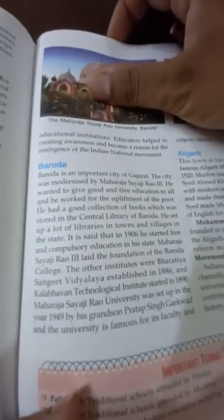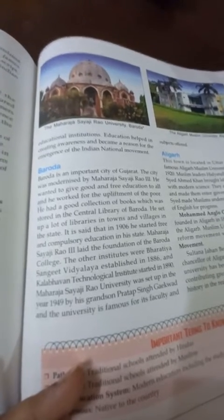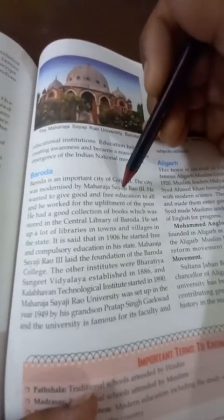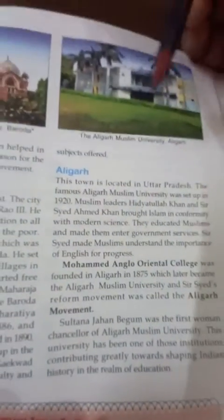Baroda is a small and important city of Gujarat state. Before independence it was a princely state, and Maharaja Shivaji Rao III gave free and compulsory education to all his people. The idea of free and compulsory education for all was also incorporated into the Indian Constitution after independence. Our Constitution makers kept in mind this principle, drawing inspiration from the steps taken by Maharaja Shivaji Rao III.